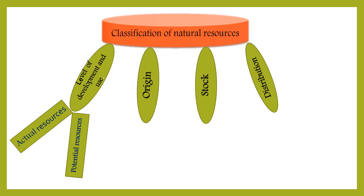On the basis of level of development and use, resources are of two types: actual resources and potential resources. Actual resources means those resources whose quantity is known and which we use at this moment.